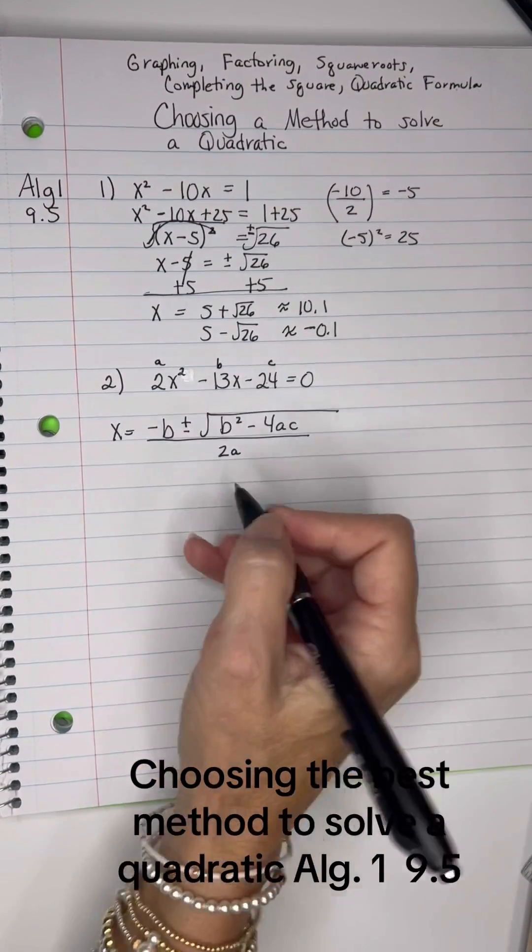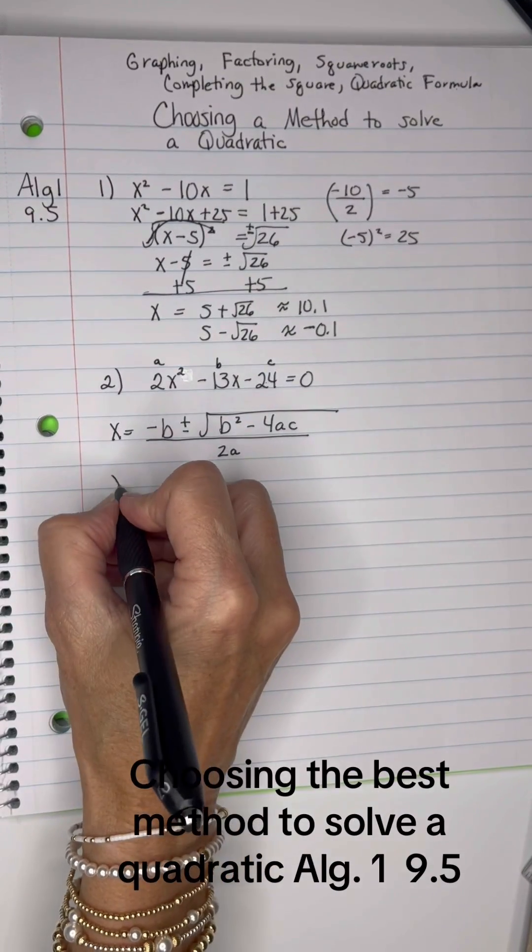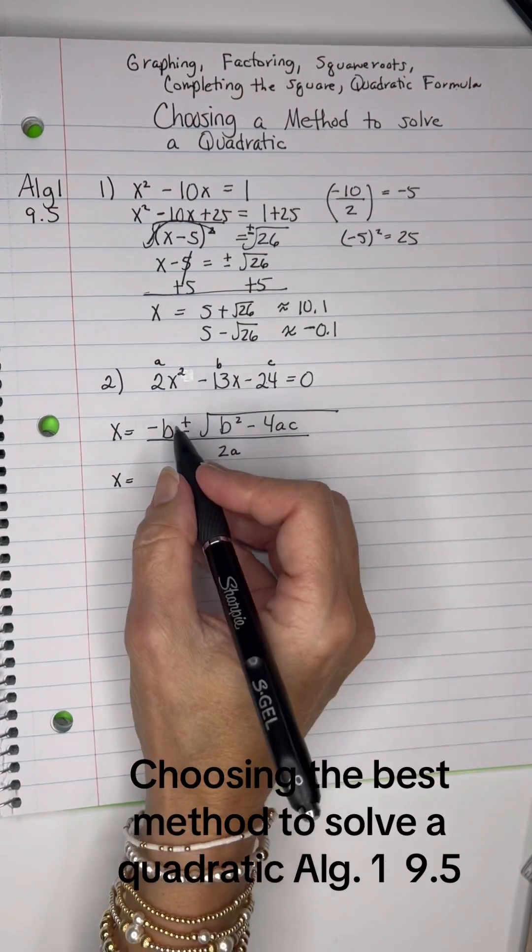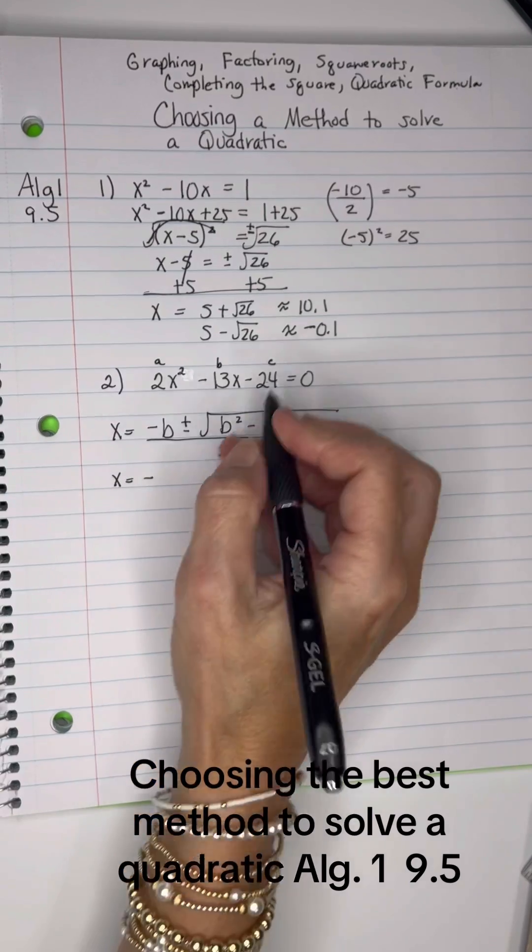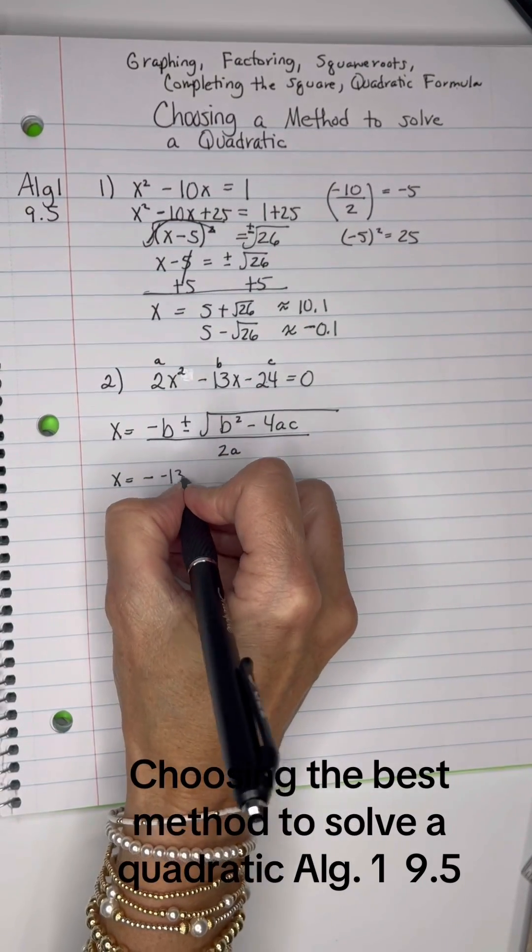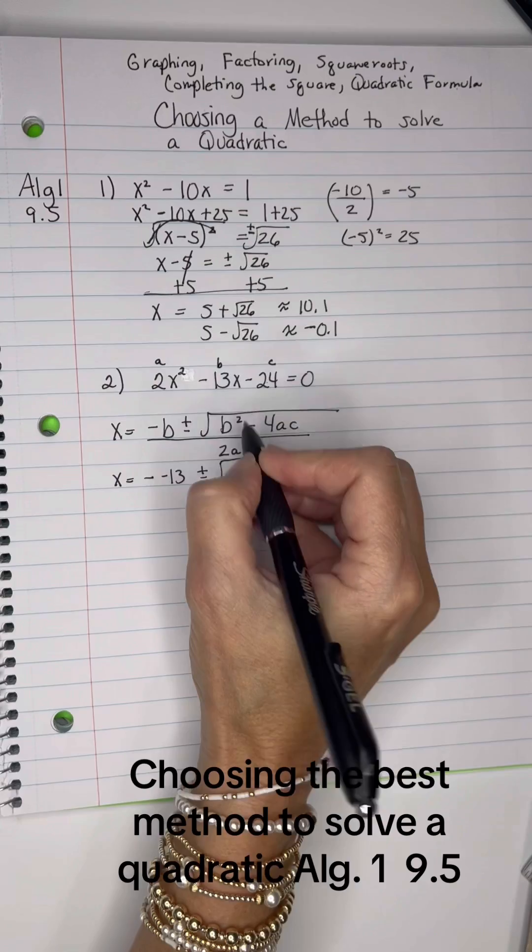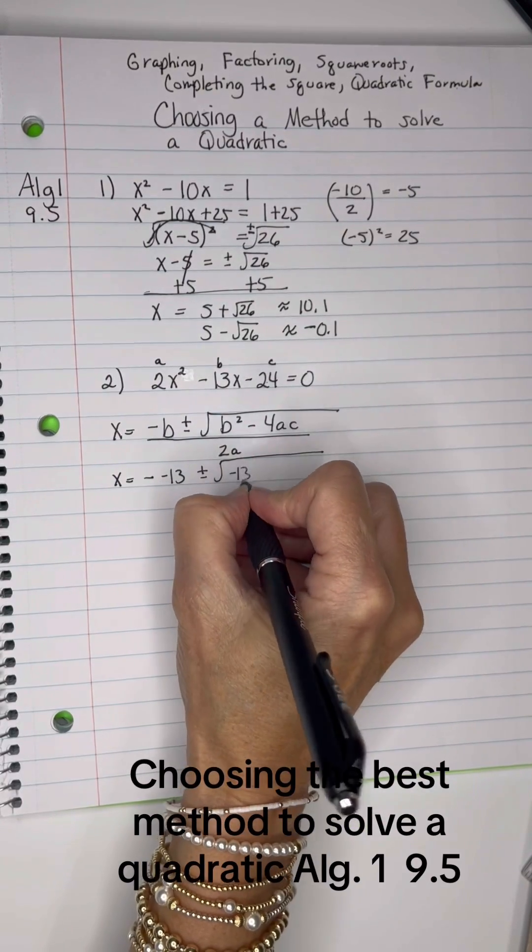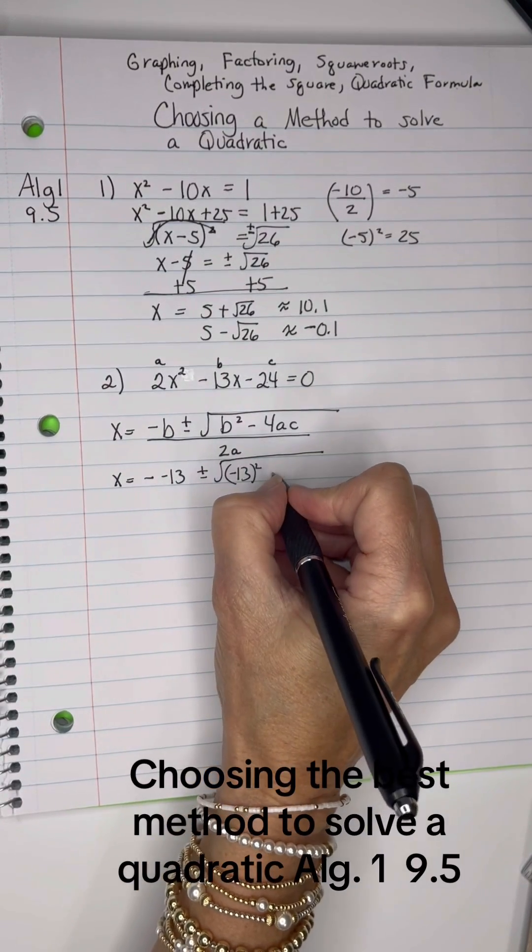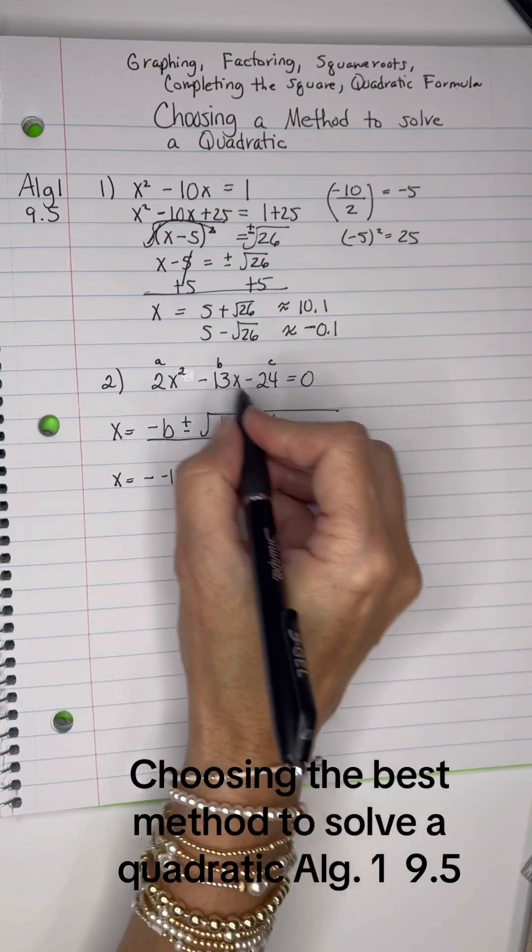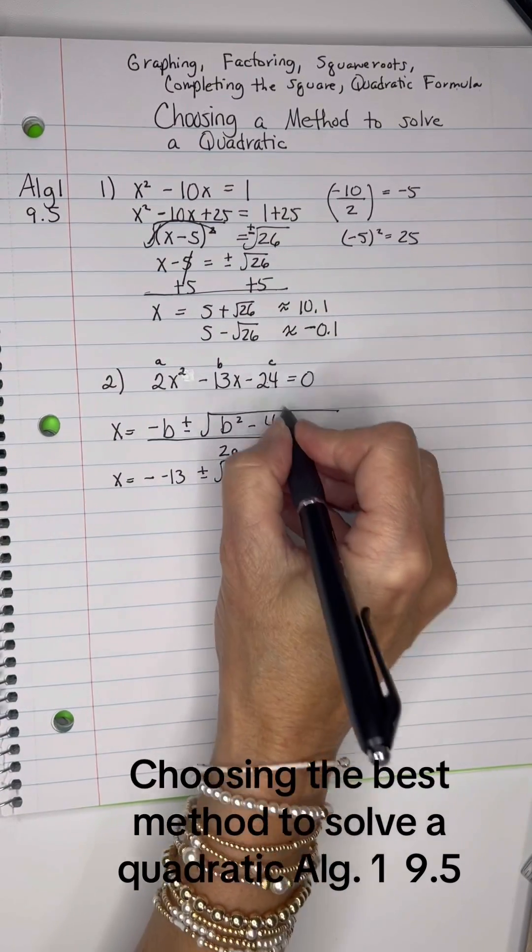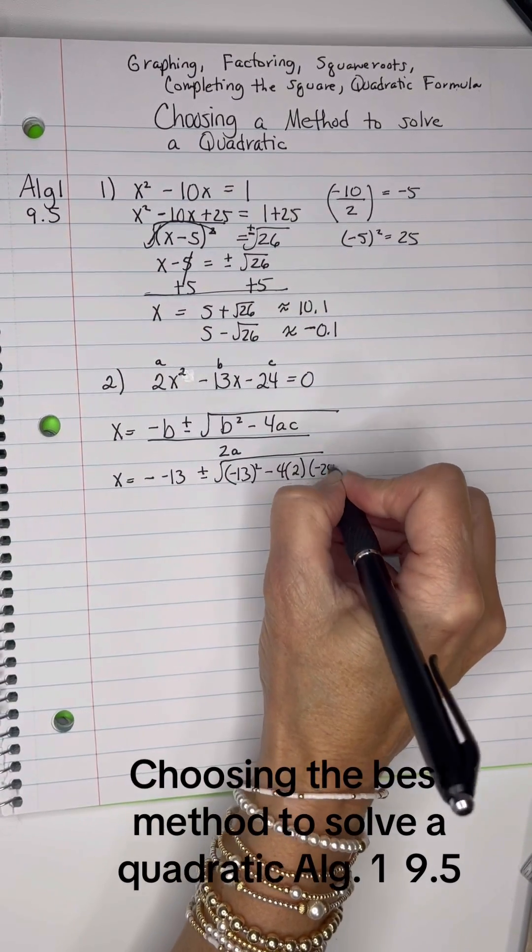Sing row row your boat and I can help you memorize that. So I have negative negative 13 plus or minus the square root. The b squared is negative 13 squared minus 4 times a, which is 2 times c, which is negative 24. Big old numbers here.